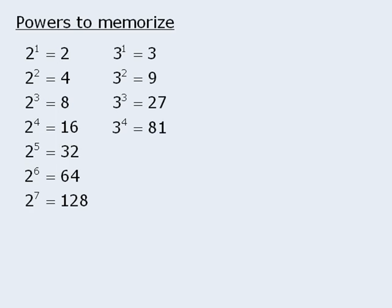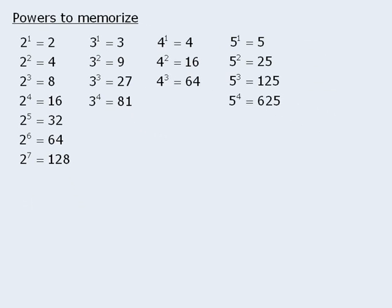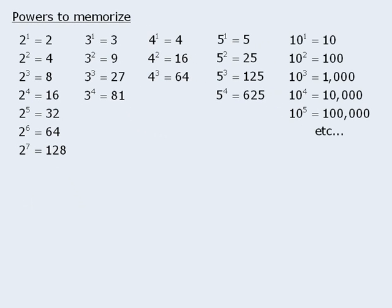Before we conclude, it is quite useful to memorize certain powers to save time on test day. The powers typically tested include the powers of 2 up to 2 to the power of 7, the powers of 3 up to 3 to the power of 4, the powers of 4 up to 4 cubed, the powers of 5 up to 5 to the power of 4, and all powers of 10. The powers of 10 are easy to memorize since the exponent tells us how many zeros follow the 1 — for example, 10 to the power of 5 equals 1 followed by 5 zeros.